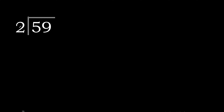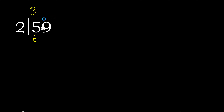59 divided by 2. 5 is not less than 2, therefore with 5: 2 multiplied by 3 is 6. 6 is excessive.